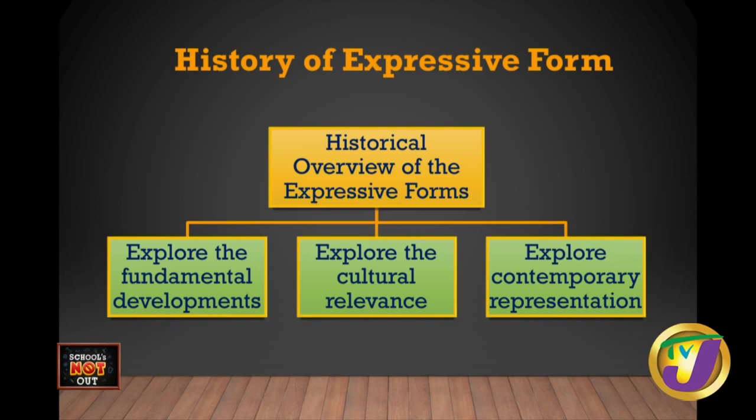For example, traditional paintings were done in oil using brush on canvas. Today, what are we painting on? It's way more contemporary now. There are artists painting on wood, painting on walls. So how is painting applicable today? You do this for every expressive form — looking at the historical part, then the cultural part, and then the contemporary part.